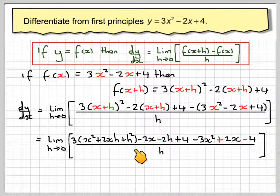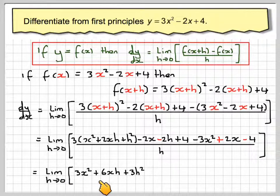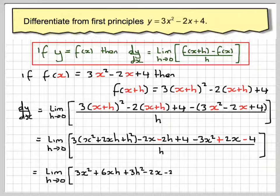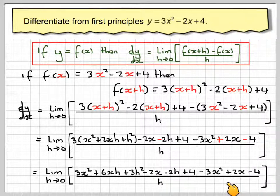We have got this 3 which can go in here. So we have the limit as h goes to 0 of 3x squared plus 6xh plus 3h squared minus 2x minus 2h plus 4 minus 3x squared plus 2x minus 4, all over h.